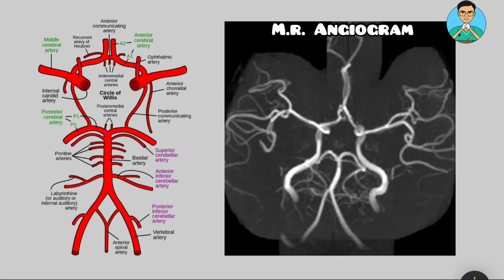The brain has two sets of paired arteries which supply the brain: the anterior system and the posterior system. The posterior system starts with a pair of vertebral arteries.